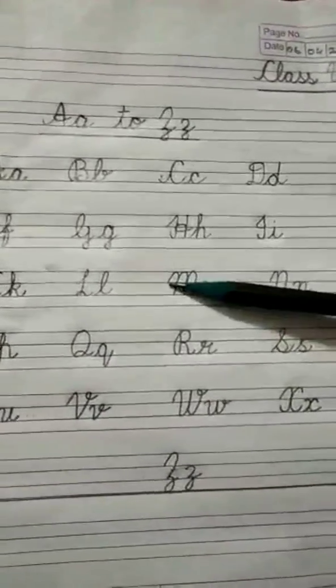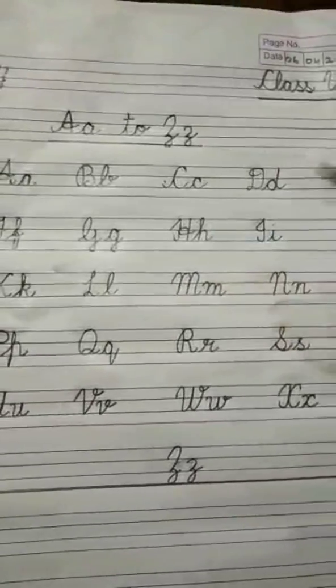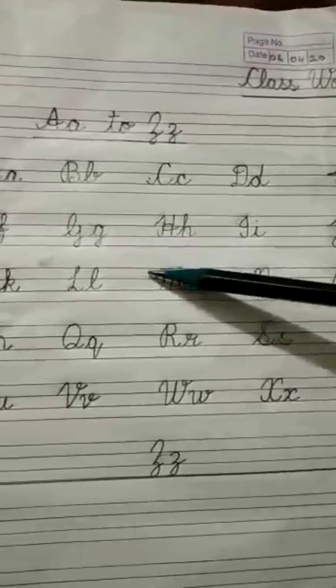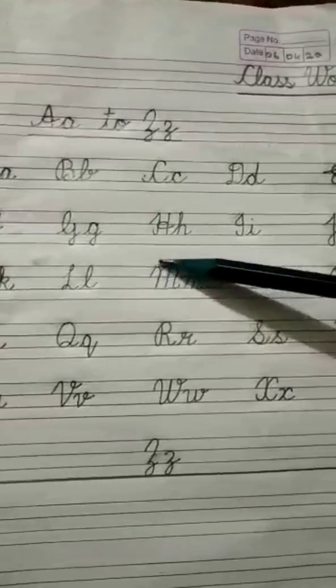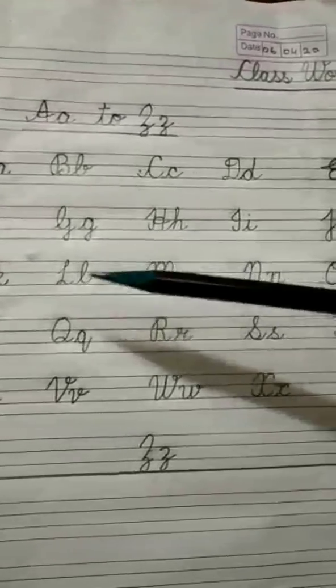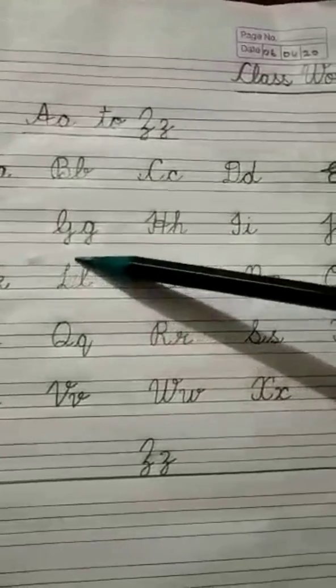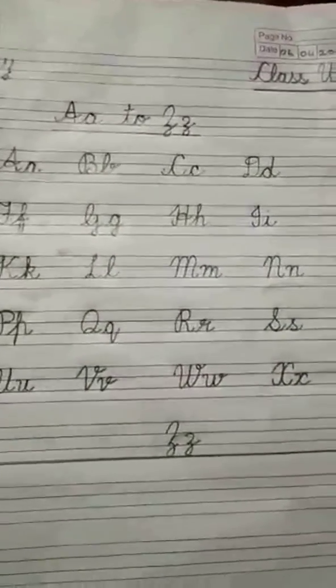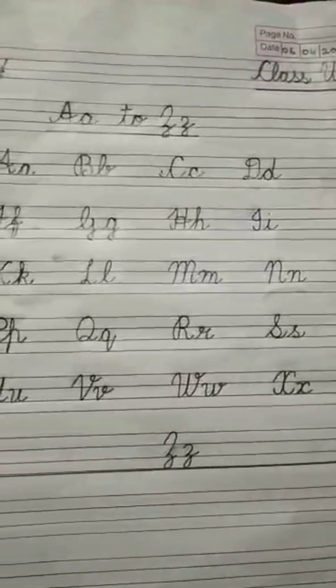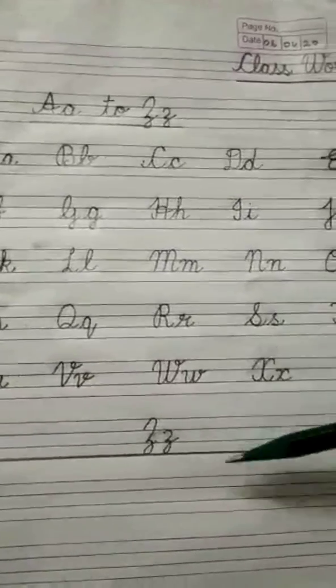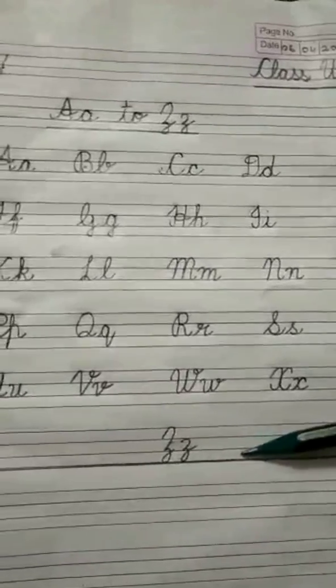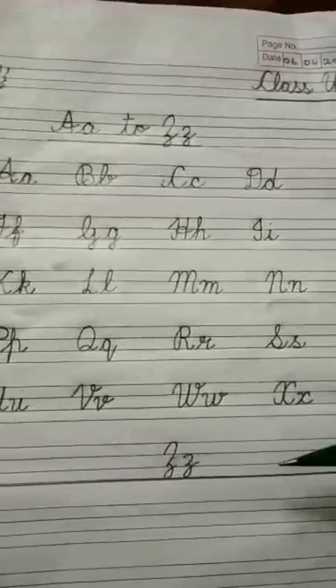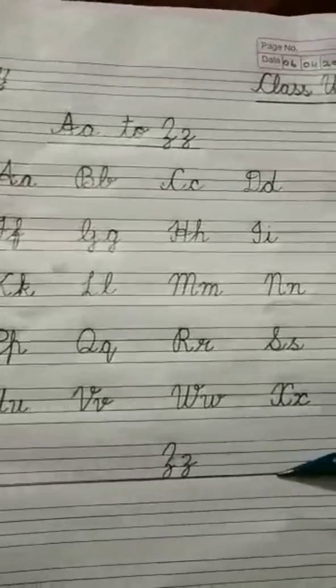Please note the formations properly. Please note from where each alphabet has started. For example, M is starting from this line, going up and coming down. L is starting from this line, going up and coming down. Observe each alphabet carefully. Note the formation and do your work. At the end, with a scale, draw a line, a finishing line on the pink line.